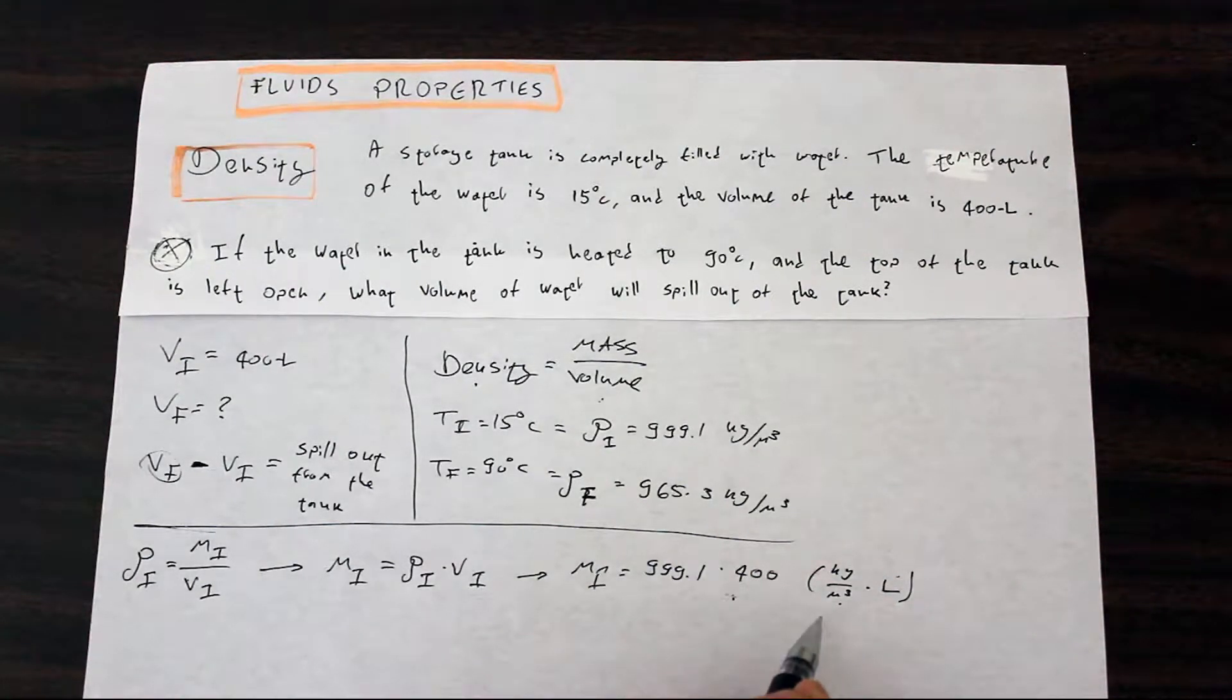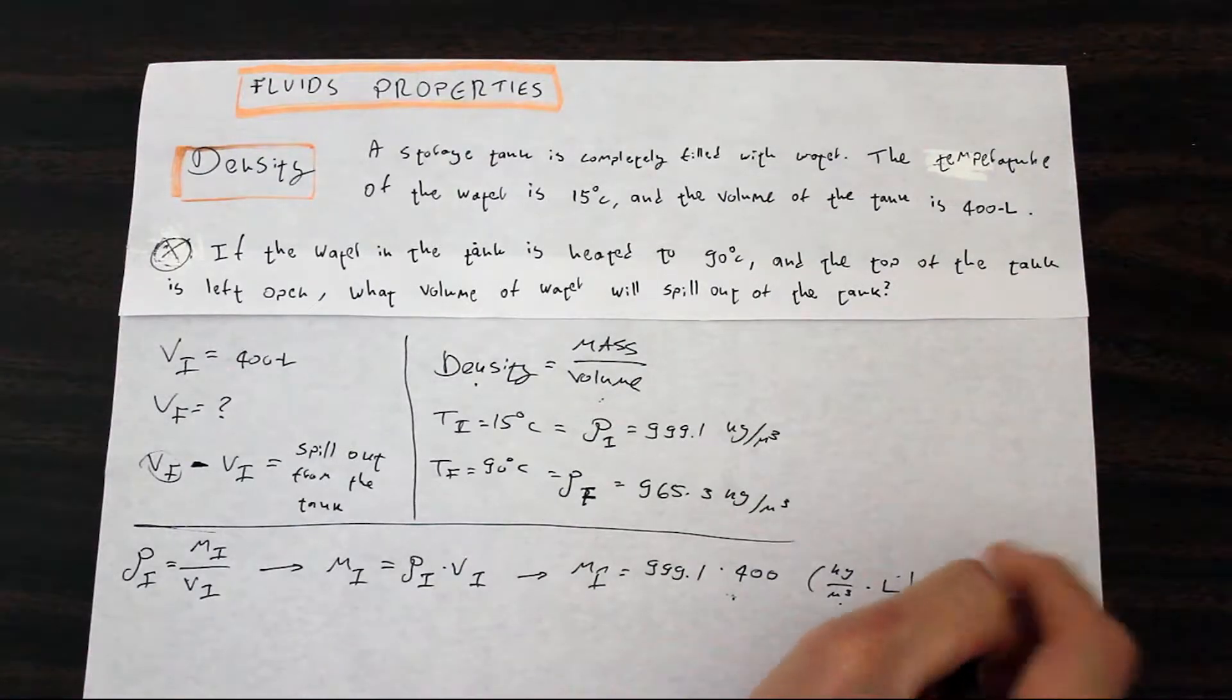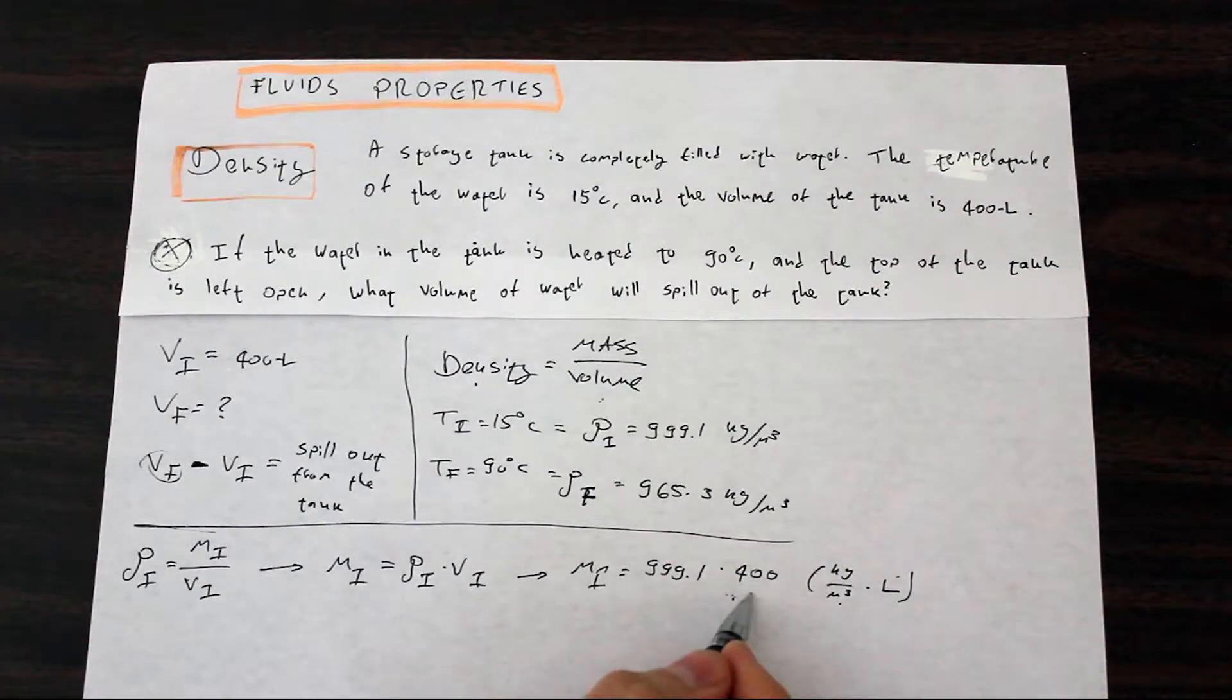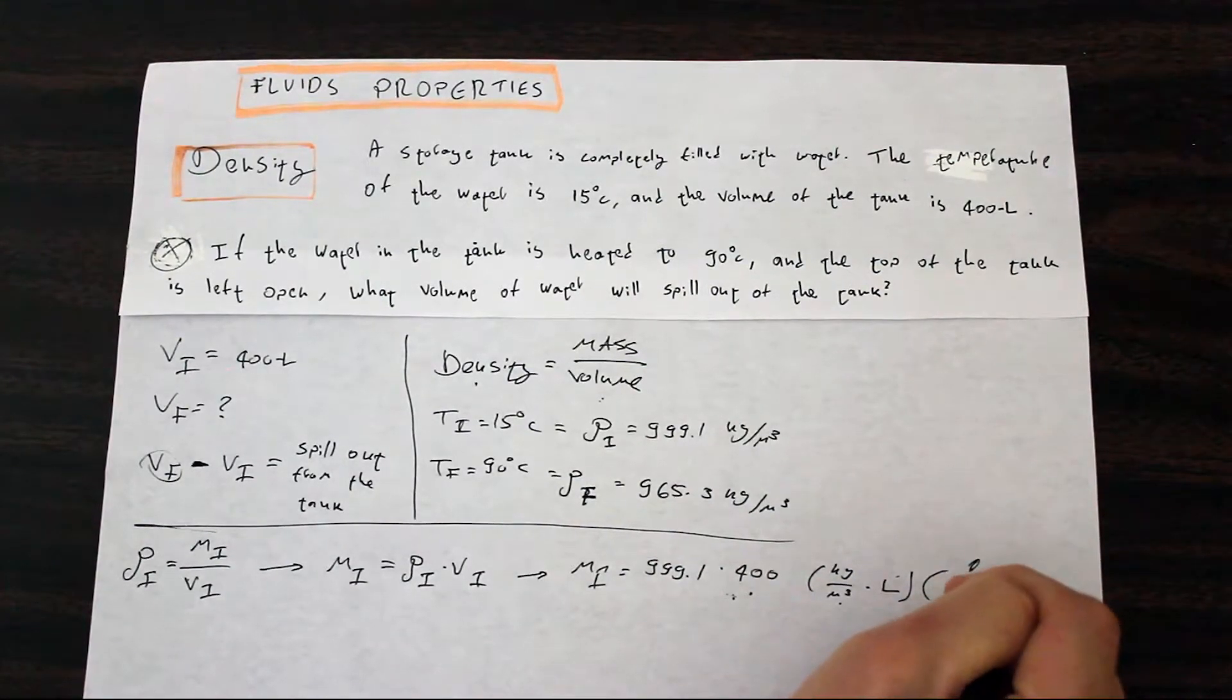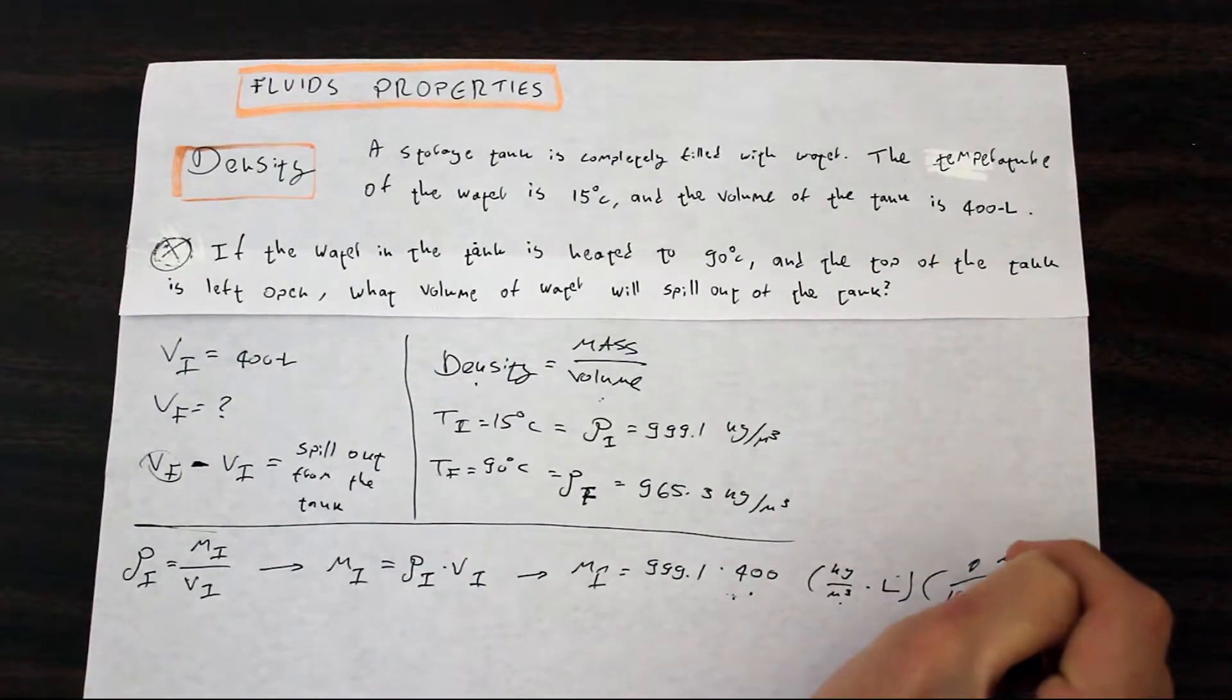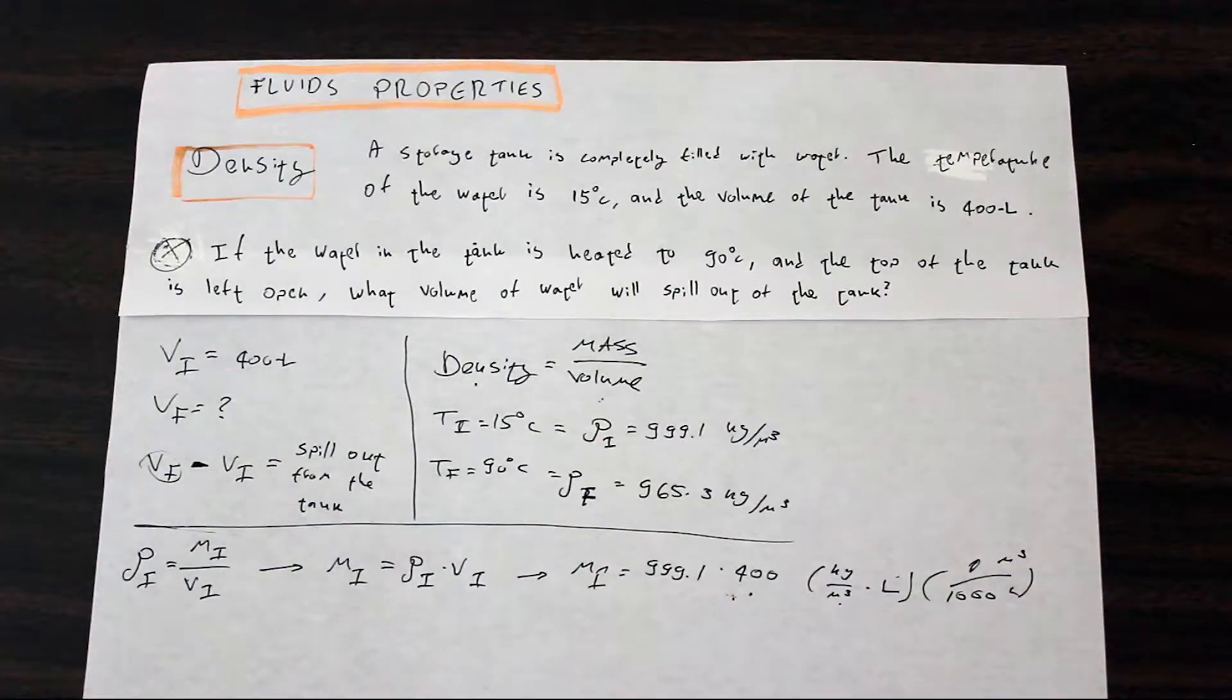We need to convert liters into meter cubed. In order to do that, the conversion is really simple. So, if we want to take it from meter cubed to liters, we multiply by a thousand. In this case, we want to divide by a thousand meter cubed over liter. So, we'll get 0.4.